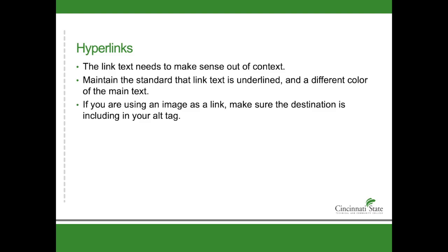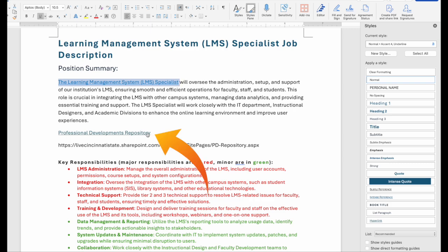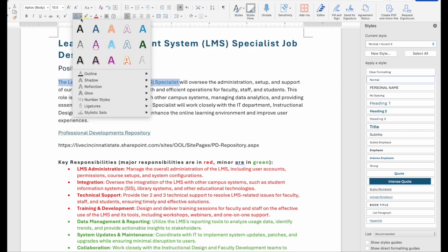You also want to maintain the standard that link text is underlined in a different color than the main text. So let's look at this example — it says 'the learning management system specialist,' and that's blue and underlined. But that's not a hyperlink; it was simply underlined with its color changed to draw it out of the text. That's not the proper way to do that — it looks like a hyperlink but isn't. If it's not a hyperlink, don't make it blue and underlined.